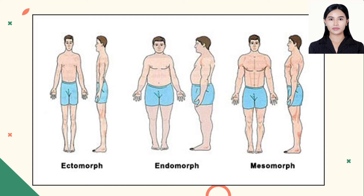The mesomorph or mesomorphic person is characterized by a solid, muscular physique — strong, with large chest, slender waist, long trunks, and short but powerful legs and arms. Mesomorphic persons are moderate in height and very strong in carrying heavy weights. Mesomorphic persons enjoy vigorous and exciting physical activities like wrestling, basketball, and football.